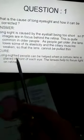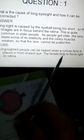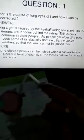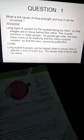So how we can remove this defect? Long-sighted people can be helped when a convex lens is placed in front of each eye. The lenses help to focus light on the retina. Then they are able to see the images. This is the answer of question number one.